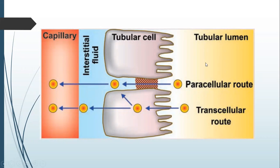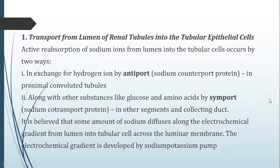Looking at the structure: this is the tubular lumen. Sodium is transported from the lumen into the cell, then from the cell into the interstitial fluid — either directly into the medullary interstitial fluid or into the interstitial fluid present between two adjacent cells in the lateral intercellular spaces. Then from the interstitial fluid into the capillary. So sodium transportation occurs in three steps: lumen to cell, cell to interstitial fluid, and interstitial fluid to capillary.